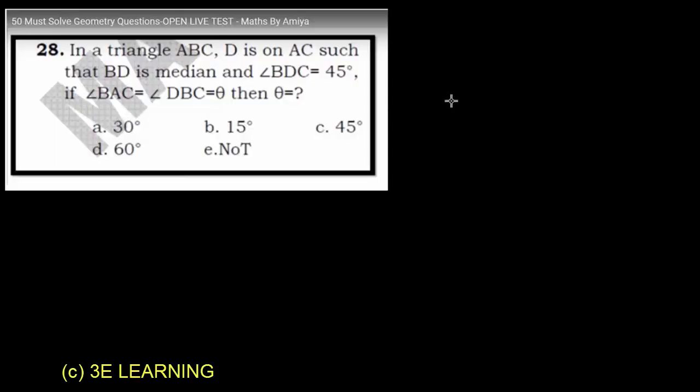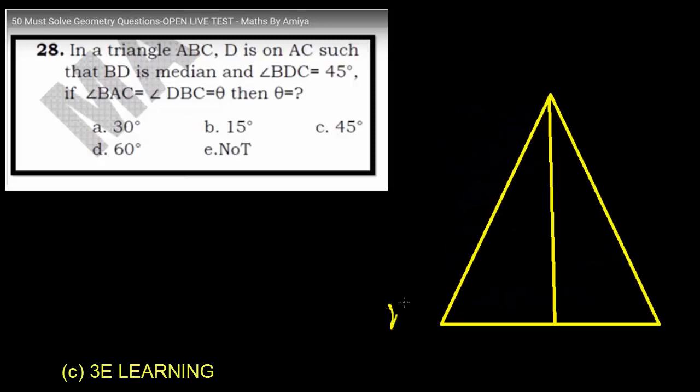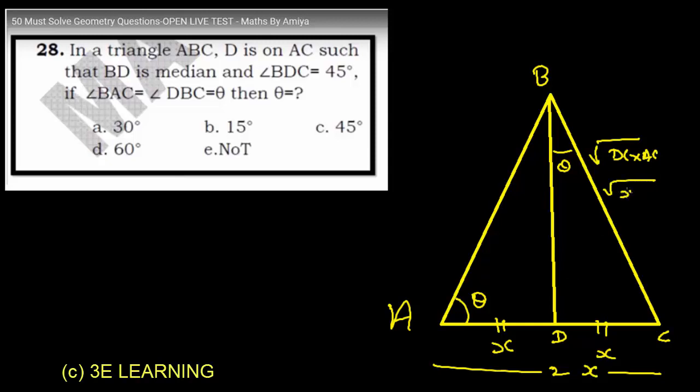Now let's solve our question. We have triangle ABC. This is A, this is B, this is C, and BD is median. So this value is X, this value is X, and the total is 2X. According to the question, angle BAC is theta. Using the similarity outcome, BC equals DC times AC, so this is X times 2X equals square root of 2X squared. This angle is 45 degrees.